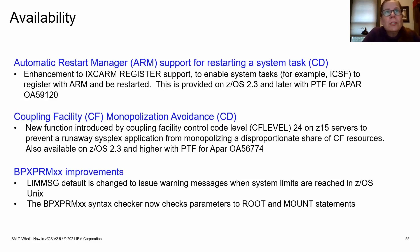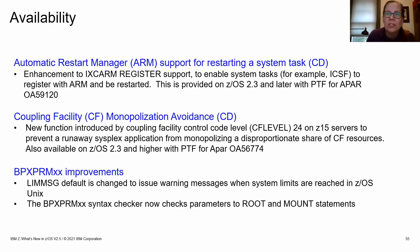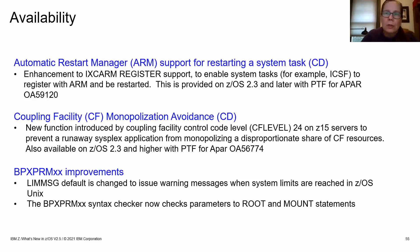Coupling Facility monopolization avoidance was introduced at CFCC level 24 on z15. If a runaway sysplex application is taking more than its fair share of CF resources, we can detect that and throttle it back down so it doesn't become a runaway application in your sysplex.